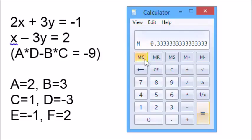Now, let's go for y. Clear the memory one more time. Then we go 2 times 2 equals memory plus, and then 1 times negative 1 equals memory minus. Hit memory recall. Divide by negative 9, which is a times d minus b times c again. And we'll have an answer of negative 5 ninths for y or .556.